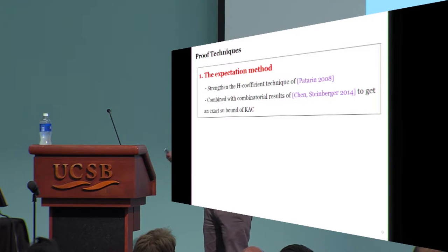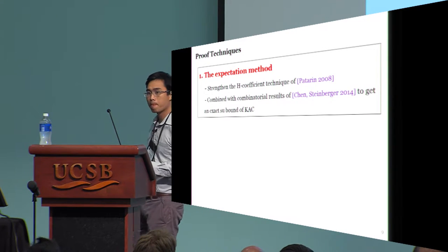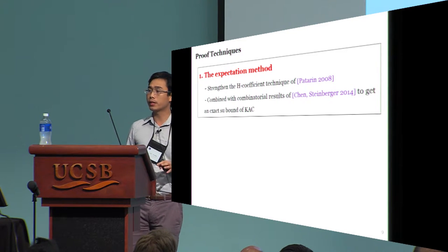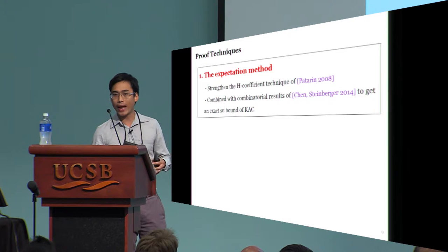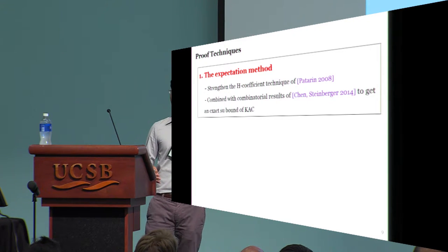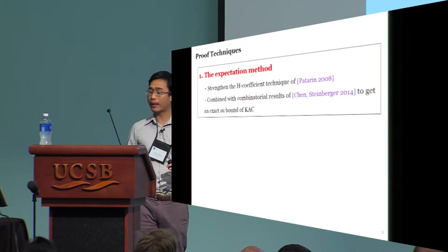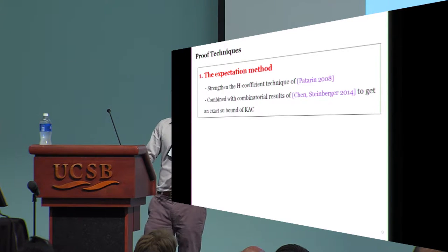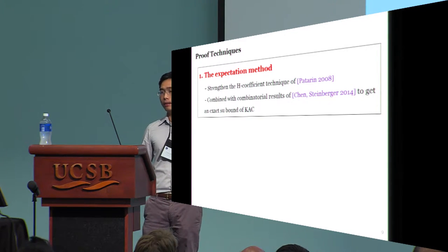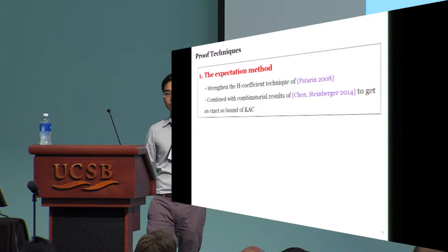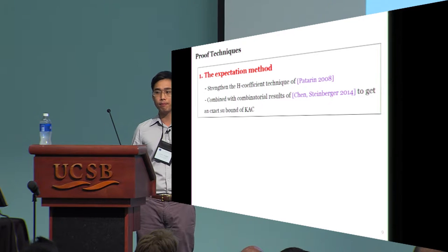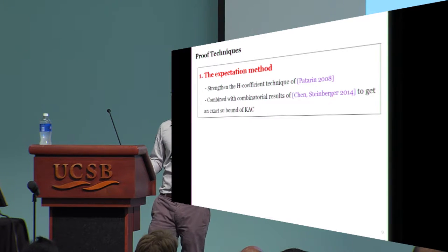Let me now introduce our proof techniques. Our main quantitative improvement compared to Chen and Steinberger is due to a generalization of the H-coefficient technique that we call the expectation method. When we combine this with a combinatorial lemma by Chen and Steinberger, we immediately obtain a concretely tight bound for single-user security of KAC.